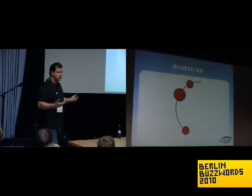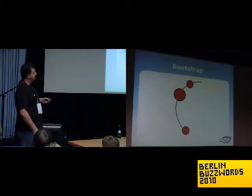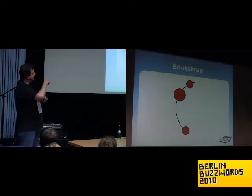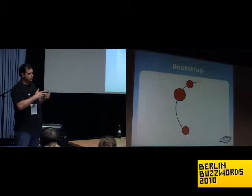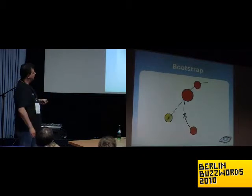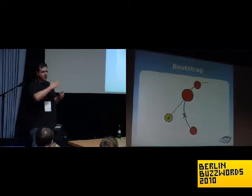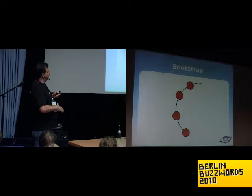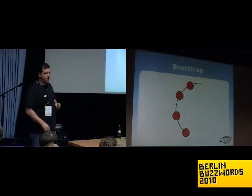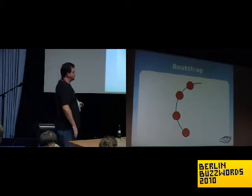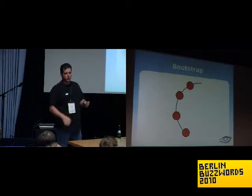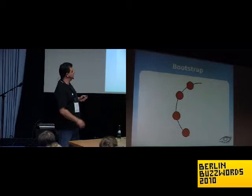When you start a new node to provision extra capacity, the joining node looks at all existing nodes, finds the most heavily loaded node storage-wise, picks a location halfway in that range, copies over the corresponding keys for that midpoint, then joins the ring and starts answering requests. That's completely automated — you just stand up a new node, point it at at least one existing node, and it just does it.